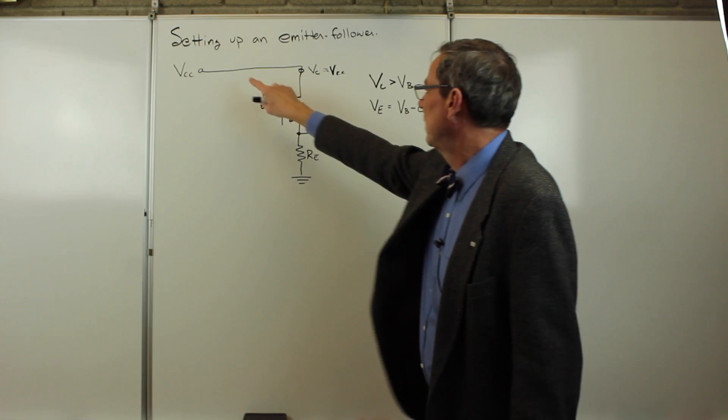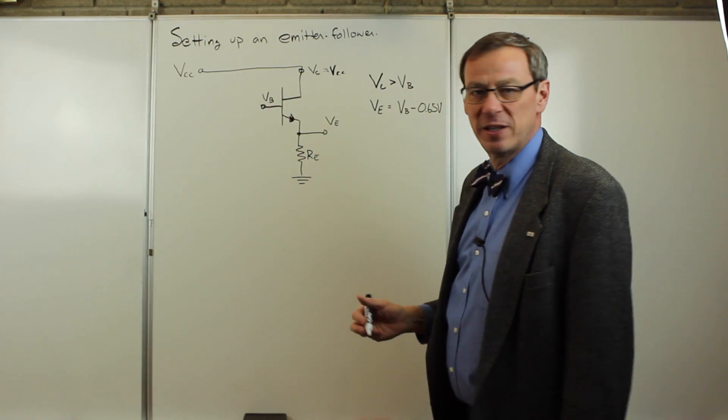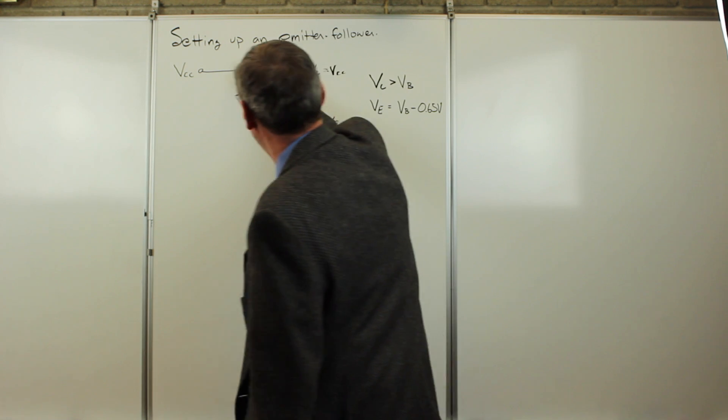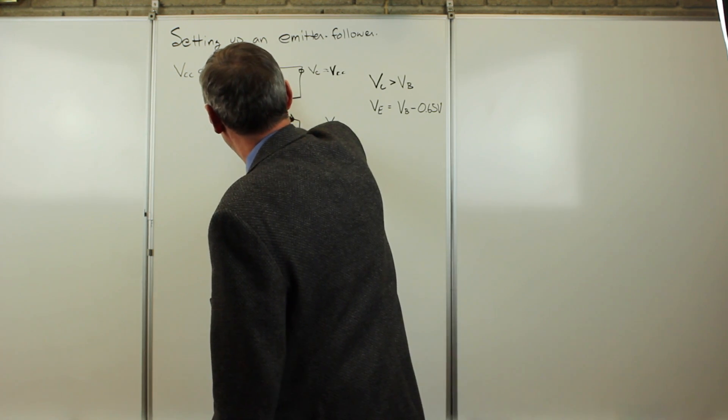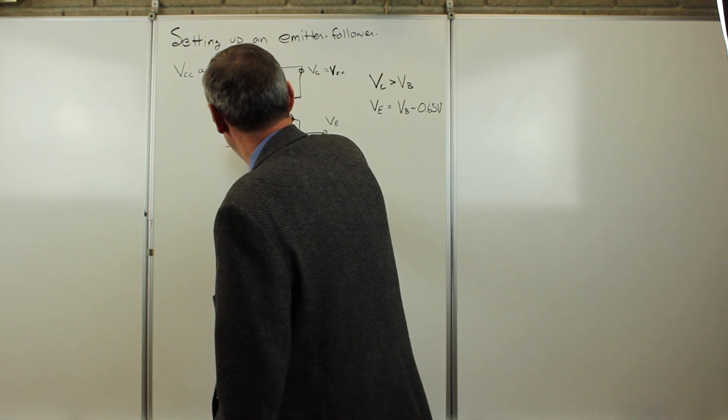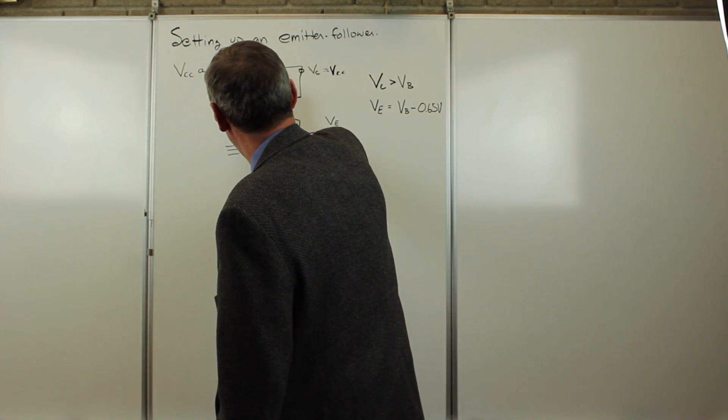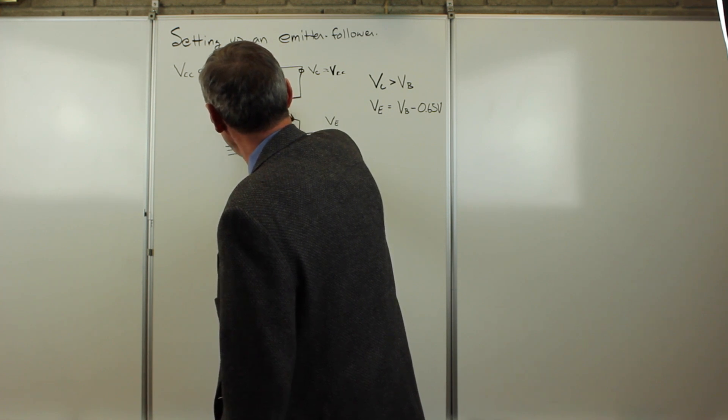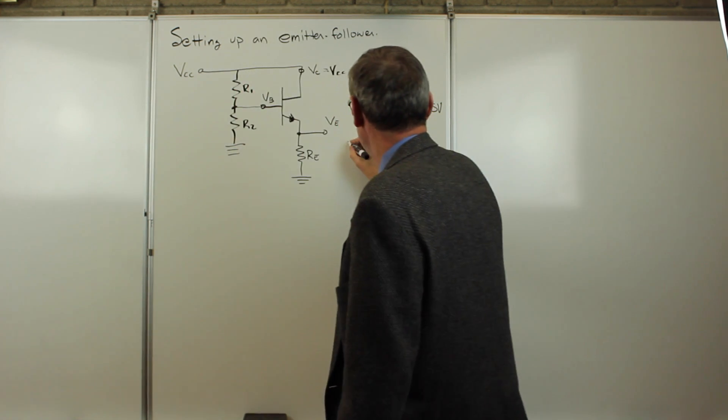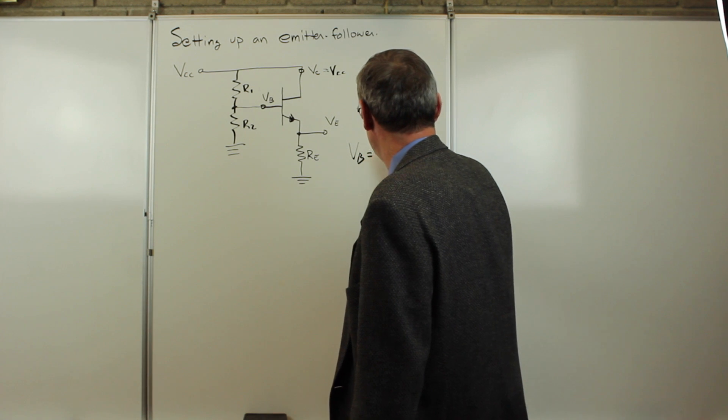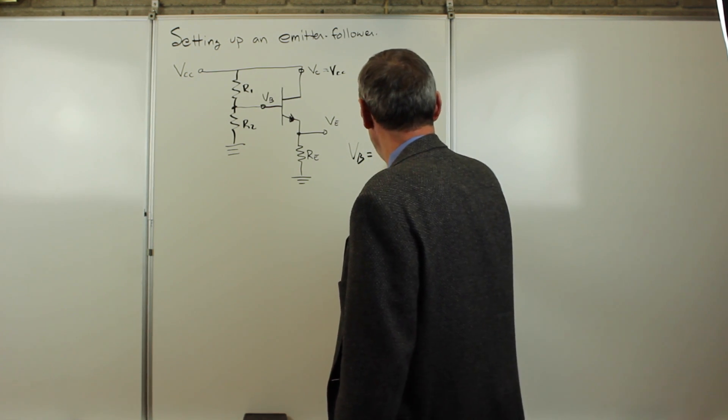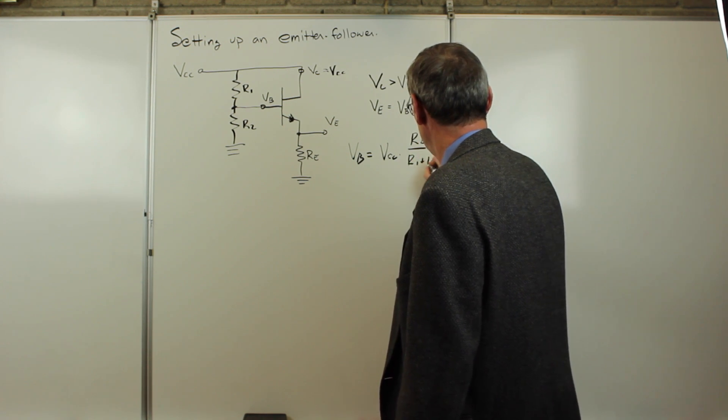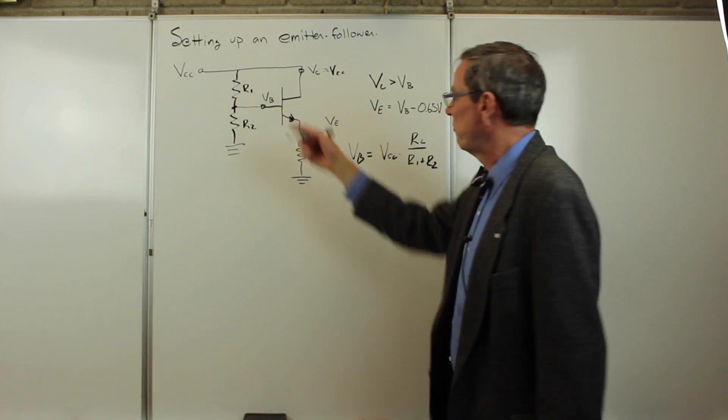The next thing I'd like to do is take a fraction of this voltage and put it into the base. The easiest way to take a fraction is to set up a voltage divider. So we put some R1 and R2 there, connect that to the base. Now the base voltage is VCC times R2 over R1 plus R2, a fraction of that.